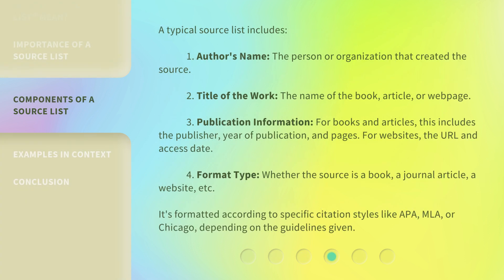A typical Source List includes: 1. Author's name — the person or organization that created the source. 2. Title of the work — the name of the book, article, or webpage. 3. Publication information — for books and articles, this includes the publisher, year of publication, and pages; for websites, the URL and access date. 4. Format type — whether the source is a book, a journal article, a website, etc. It's formatted according to specific citation styles like APA, MLA, or Chicago, depending on the guidelines given.